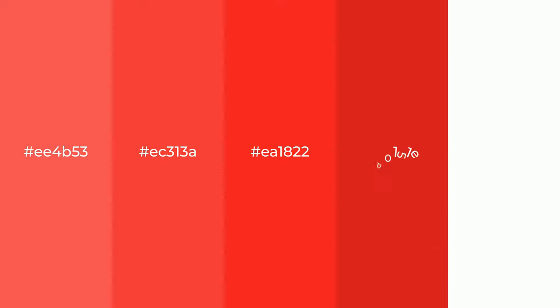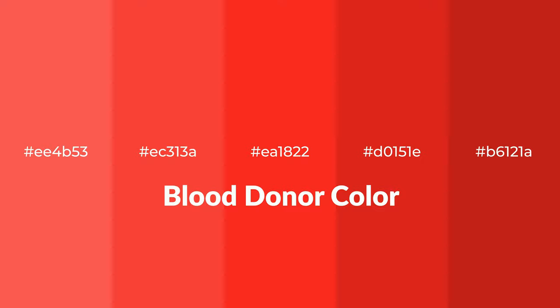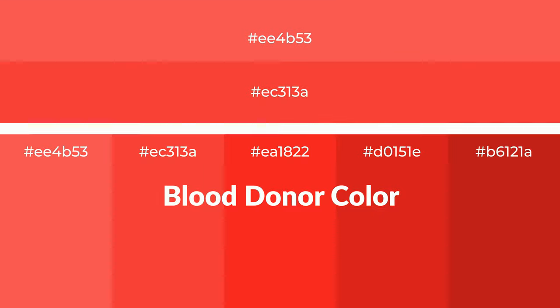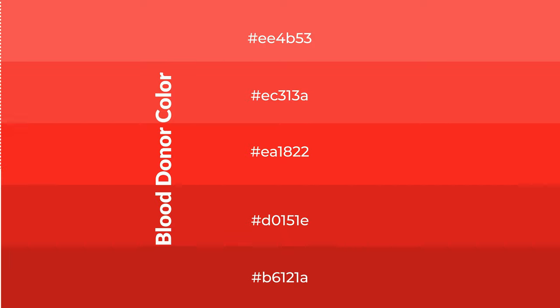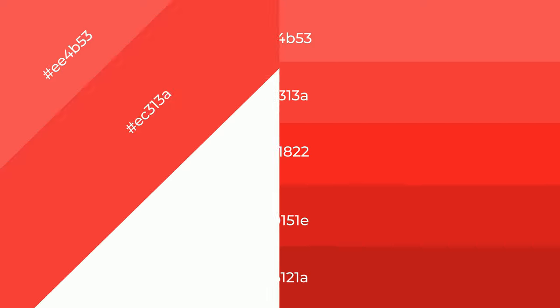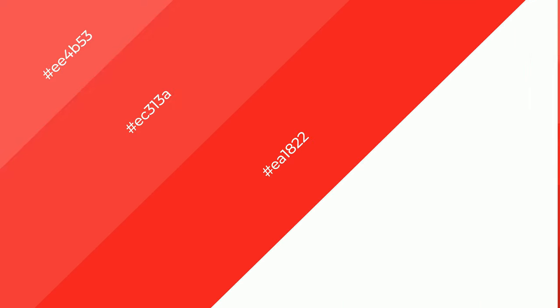Warm shades of blood donor color with red hue for your next project. To generate tints of a color, we add white to the color. Tints create light and exquisite emotions. To generate shades of a color, we add black to the color, and it is used in patterns, 3D effects, and layers. Shades create depth and drama.